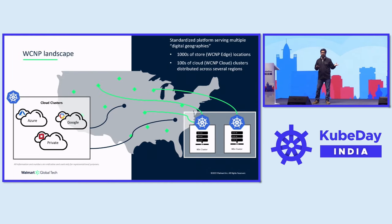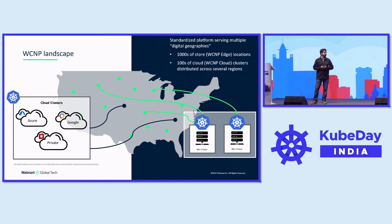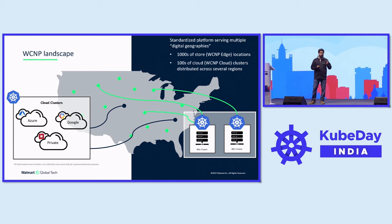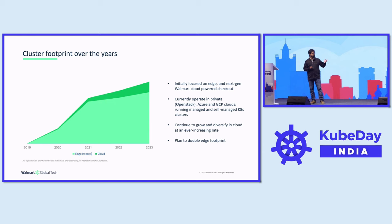Operating this platform at Walmart scale is pretty big. We have thousands of stores and thousands of clusters deployed to each of these stores — this forms one digital geography we call Edge. The second digital geography is in cloud, where we have clusters deployed in multiple regions and multiple countries. This provides a very diverse environment in which we need to run and operate our controllers and our control plane. We continue to grow in Edge as well as in the cloud.